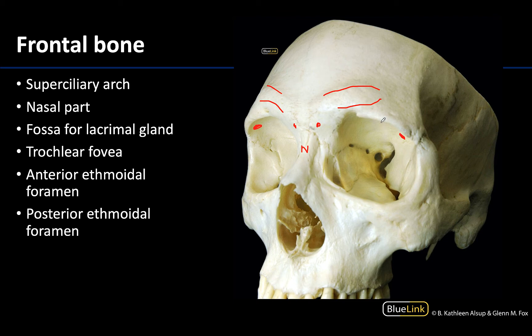The trochlear fovea is on the opposite side — heading more medial, so superior medial within the orbital region. This is where the trochlea of the superior oblique muscle sits, which is an extraocular eye muscle; we'll talk about that in more detail in the orbit session. The last two things to identify in this view are the ethmoidal foramina — these tiny holes in the medial portion of the orbit. The anterior one is the anterior ethmoidal foramen, and the posterior one is the posterior ethmoidal foramen. This allows ethmoidal neurovasculature to exit the skull, located right where the frontal bone meets the ethmoidal part of the orbit.